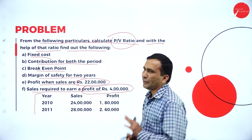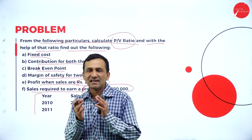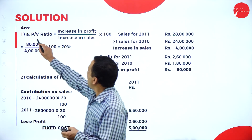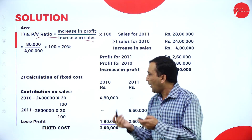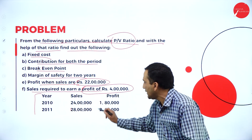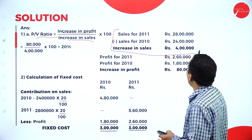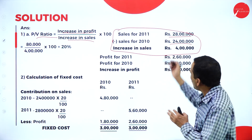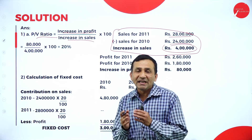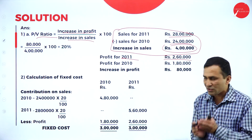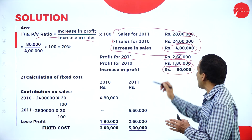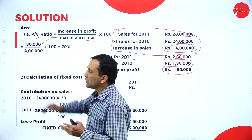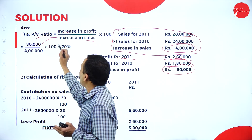Two years of sales and profit are given: 2010 is the previous year and 2011 is the current year. The PV ratio formula is: increase in profit divided by increase in sales. Sales increased by four lakhs (28 lakhs minus 24 lakhs), and profit increased by 80,000 (2,60,000 minus 1,80,000). Applying the formula: 80,000 divided by 4 lakhs, into 100 — PV ratio is 20%.